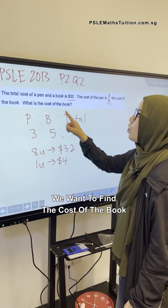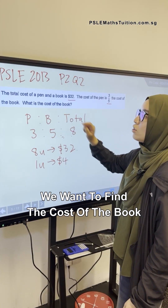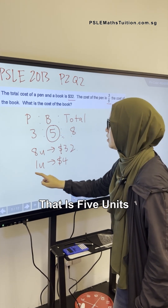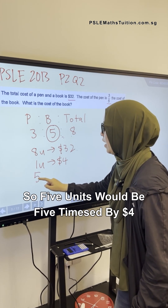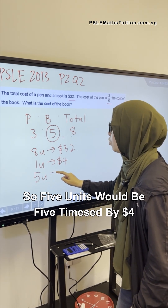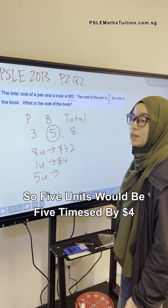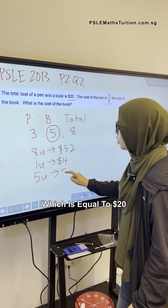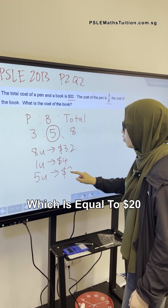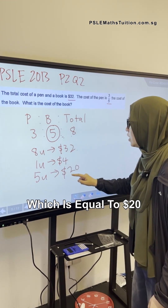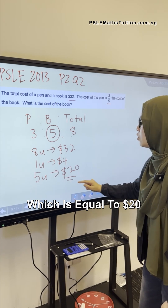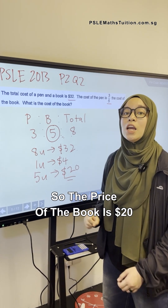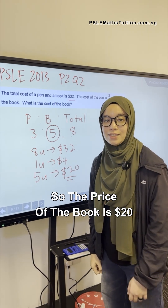We want to find the cost of the book. That is five units. So five units would be five times $4, which is equal to $20. So the price of the book is $20.